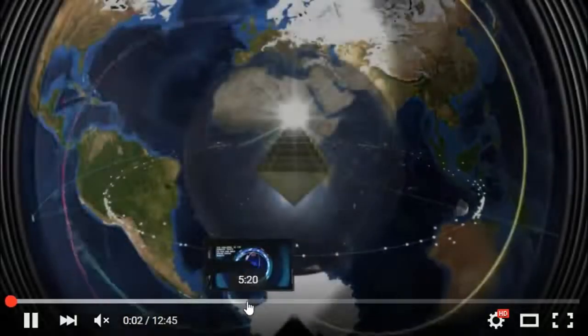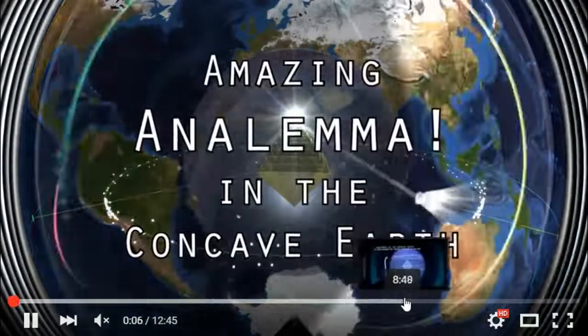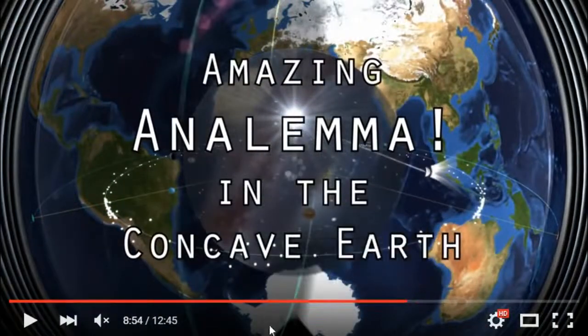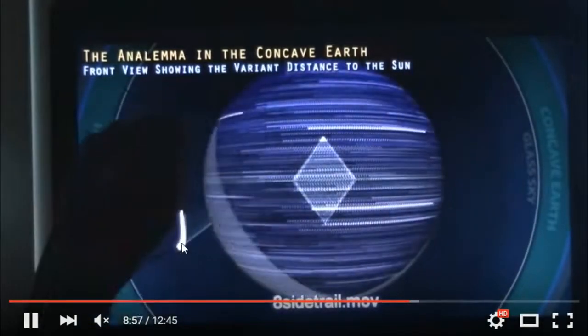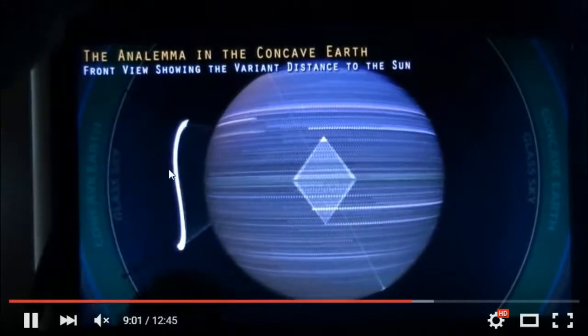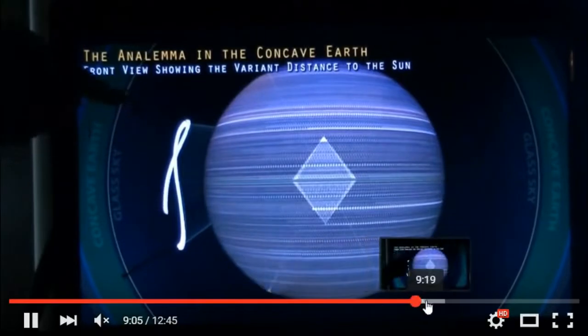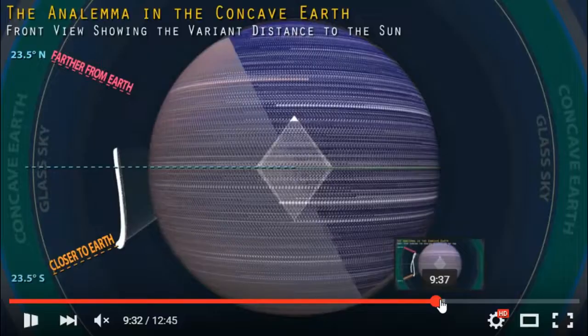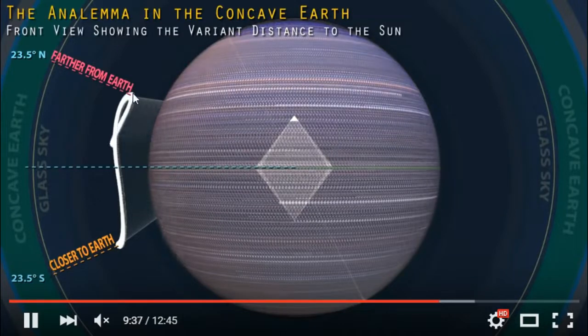Fast forward over here to this part where we see the analemma and the sun is getting closer in the southern hemisphere in order to kind of counterbalance heat so it doesn't get too cold, too frigid. There you see the sun is closer to the earth in the south and further away from the earth.